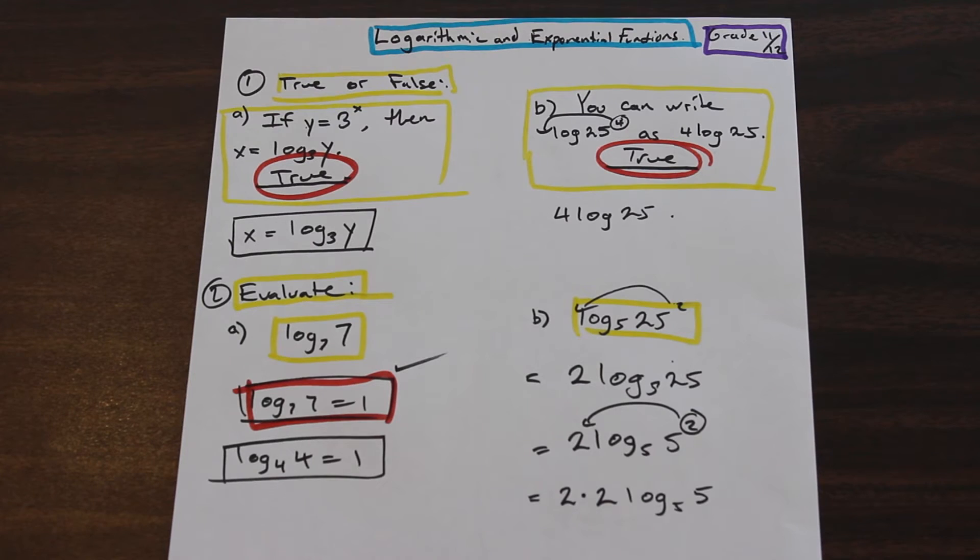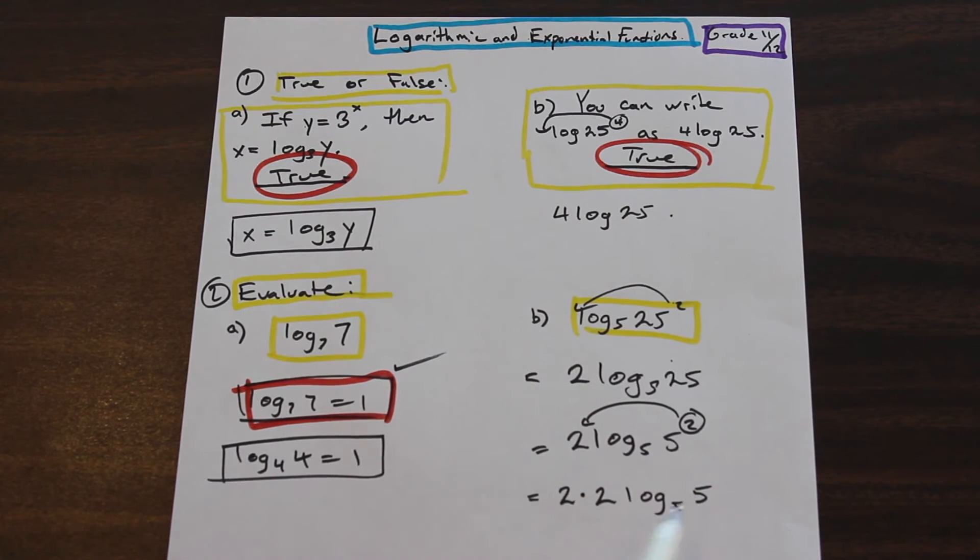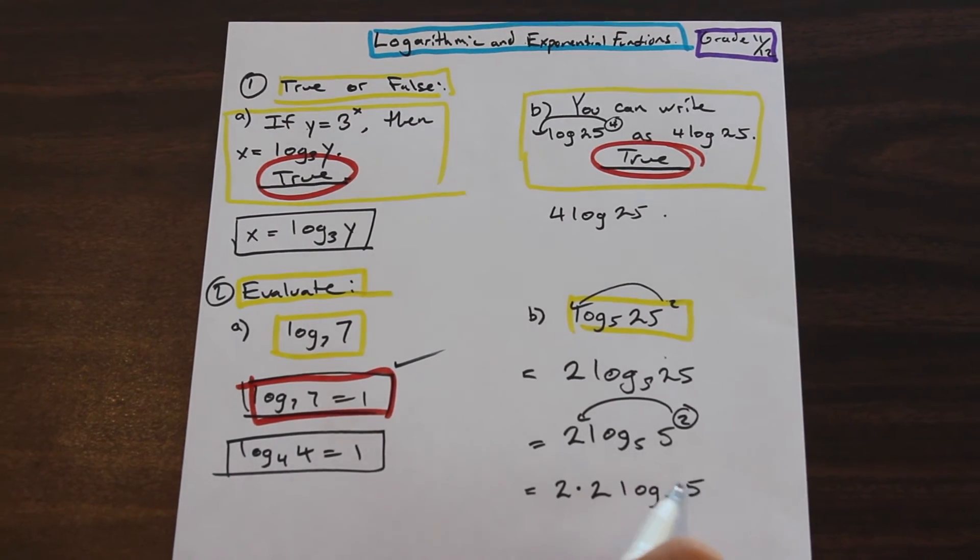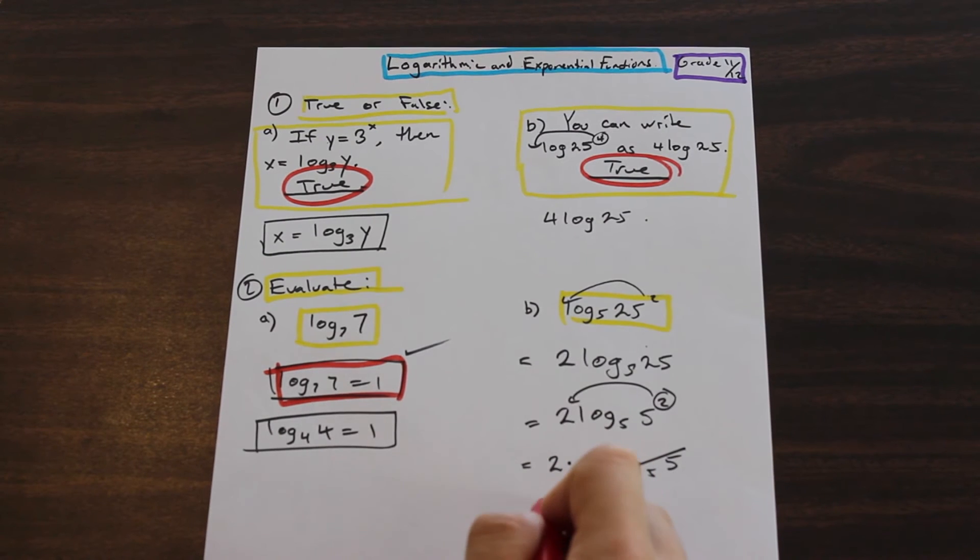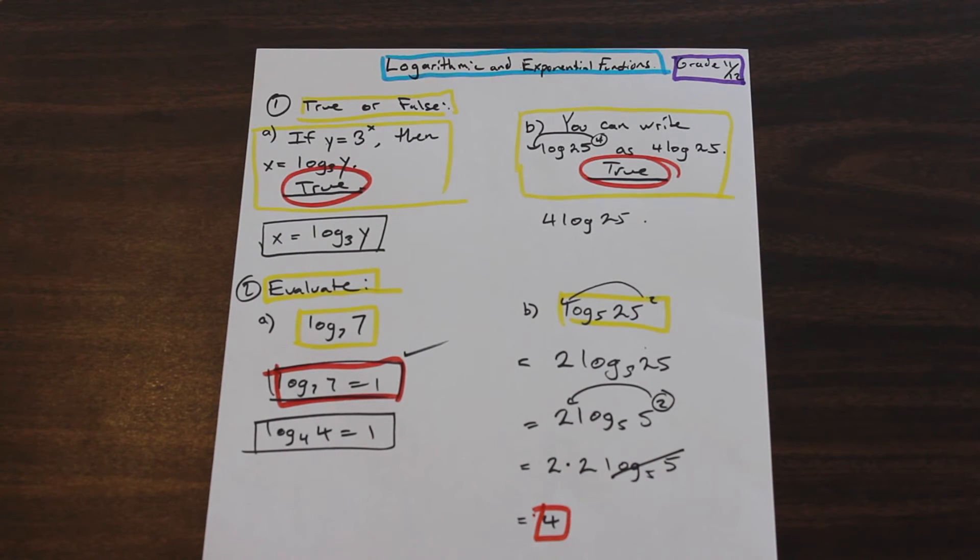And well, what do we have here? Well, we have a log base five times five, right? So that's going to be equal to one. So we can cancel that out. And two times two is equal to four. Cool. So I hope that helped. I know logs can be a little bit tricky, but you know, learn the properties of ln and logs, and it'll go a long way with helping you, especially in university.